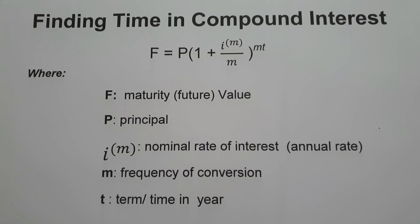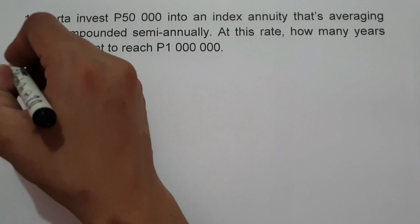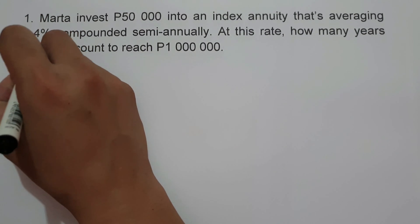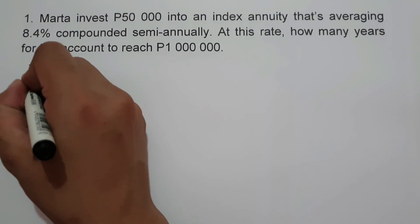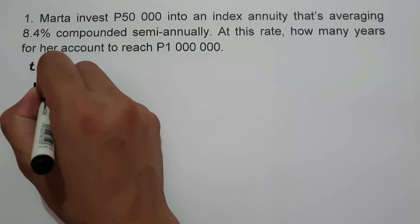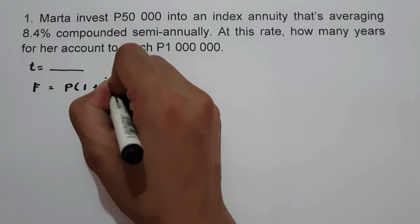Let's start with our first example. Marta invests $50,000 into an index annuity averaging 8.4% compounded semi-annually. At this rate, how many years will it take for her account to reach $1,000,000? In this problem, we are looking for time, and we will use the formula F equals P times the quantity of 1 plus I over M, raised to MT.